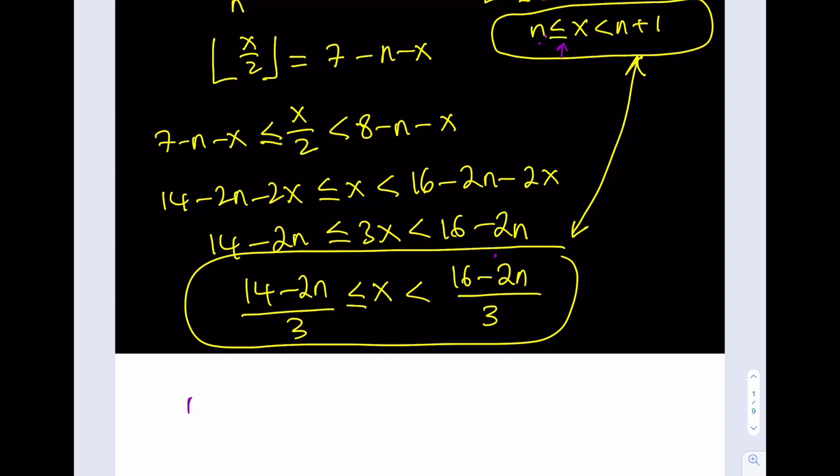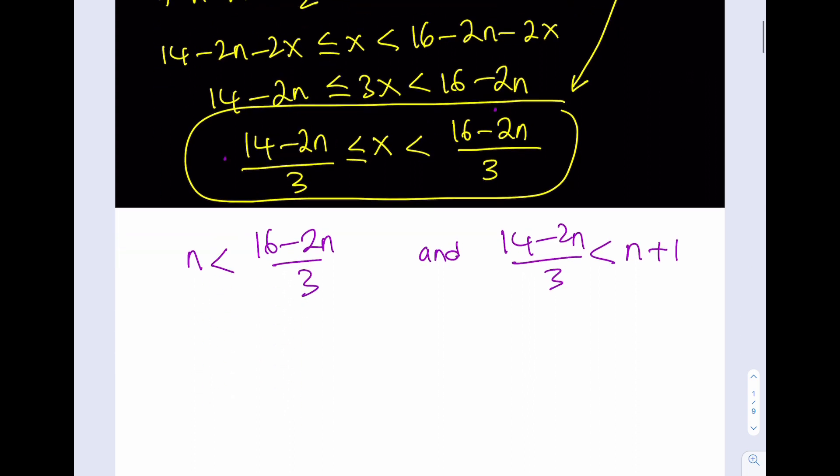So I can safely say that n is less than 16 minus 2n over 3. And because both of these have to happen, and I can say that the lower bound here, which is 14 minus 2n over 3, needs to be less than the upper bound here, which is n plus 1. So these two inequalities have to happen at the same time, simultaneously. And don't forget that n is an integer. So let's proceed.